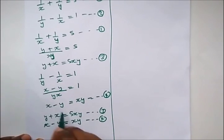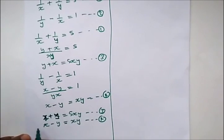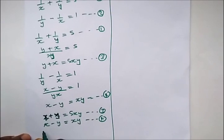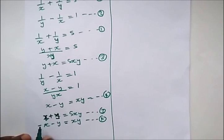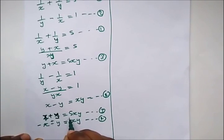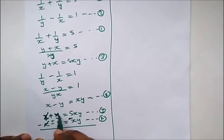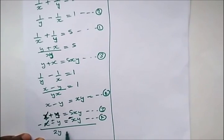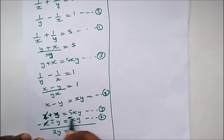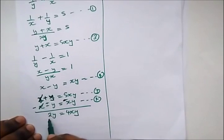Let's rearrange: putting x first, then y. To cancel out x, we subtract — the subtraction sign multiplies the whole of equation four. This gives a plus y and a minus, so the x terms cancel. We're left with y plus y which gives us 2y equal to 5xy minus xy, which gives us 4xy.